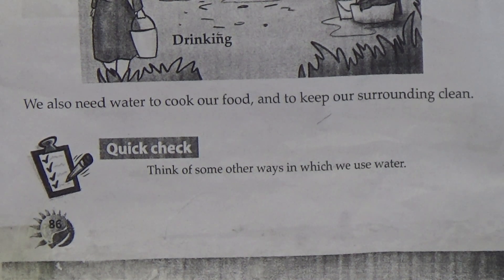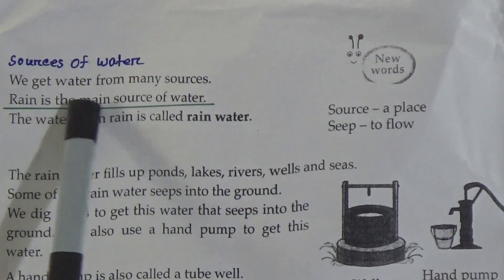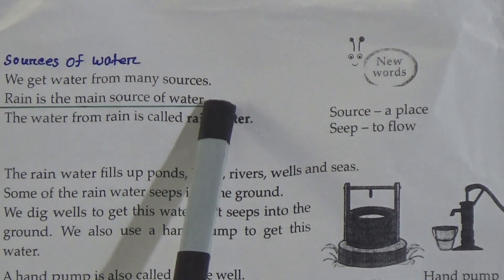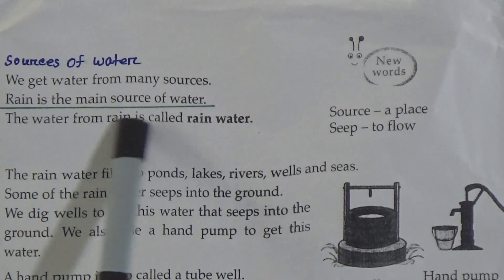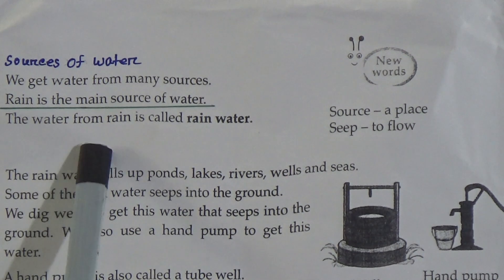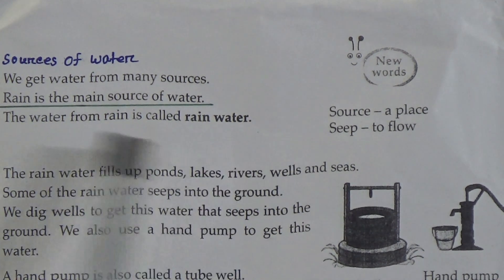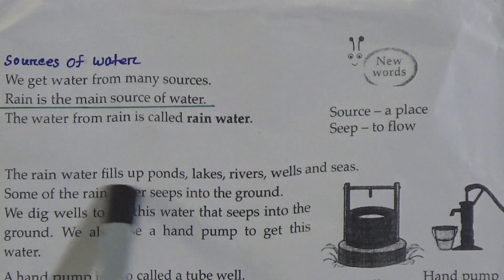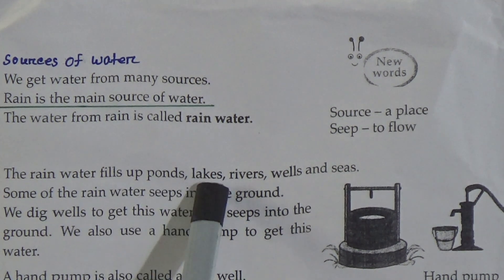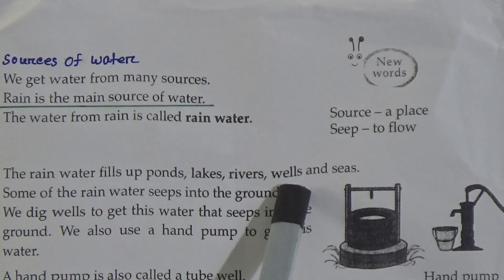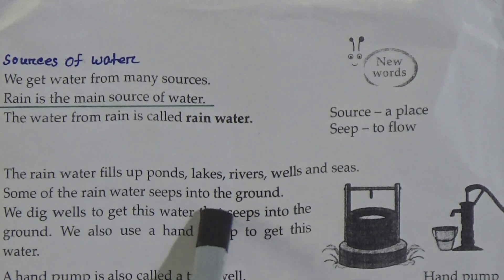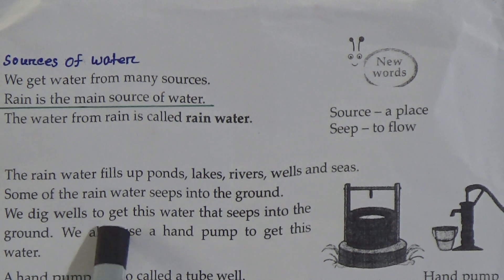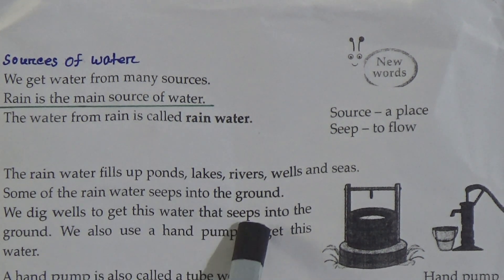Now, page 87, our topic is 'Sources of Water.' We get water from many sources. Rain is the main source of water — underline this line. The water from rain is called rainwater. Rainwater fills up ponds, lakes, rivers, wells, and seas. Some of the rainwater seeps into the ground.